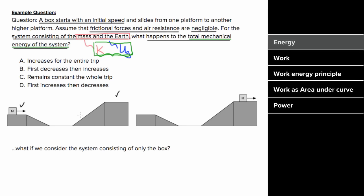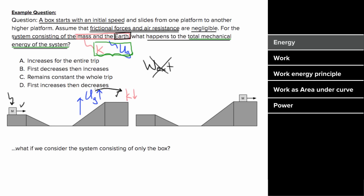As this mass slides up to a higher point on the ramp, the gravitational potential energy increases, but the mass is going to slow down, so the kinetic energy is going to decrease. However, since the earth and the mass are in our system and there are no dissipative forces, there's no external work done on our system. Yes, the earth is doing work on the box, but the earth is part of our system, so it can't do external work. That means energy just gets transferred from one form to another within our system, and the total mechanical energy remains the same for the entire trip.